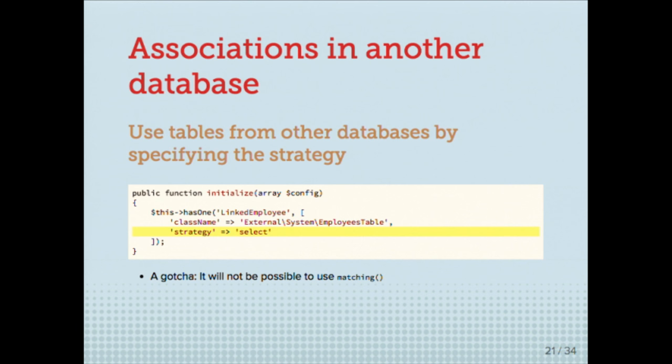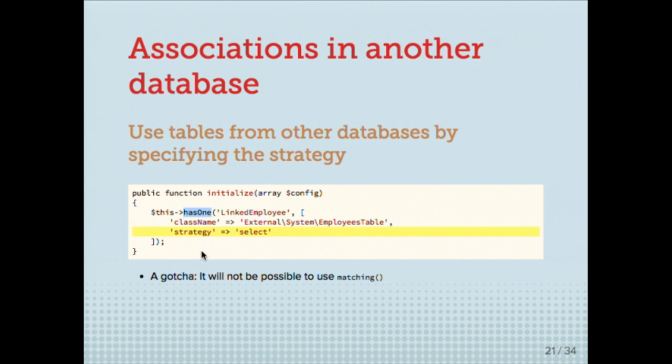Here's another gem: associations in another database. This is a recurrent question. If you have an external database and you want to create links between databases, just change the strategy of the association. For example, has_one and belongs_to will by default use JOINs, but since you can't create JOINs with an external database unless they're on the same physical server and both MySQL, you can change the strategy to 'select'. It will no longer create JOINs, but you will also not be able to use 'matching' because matching uses JOINs.